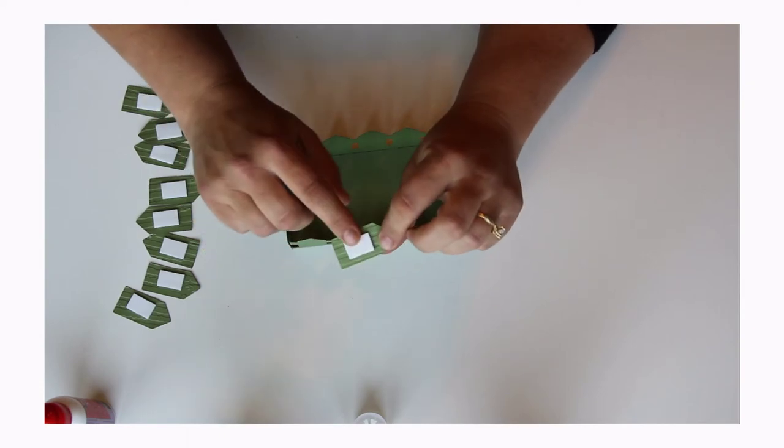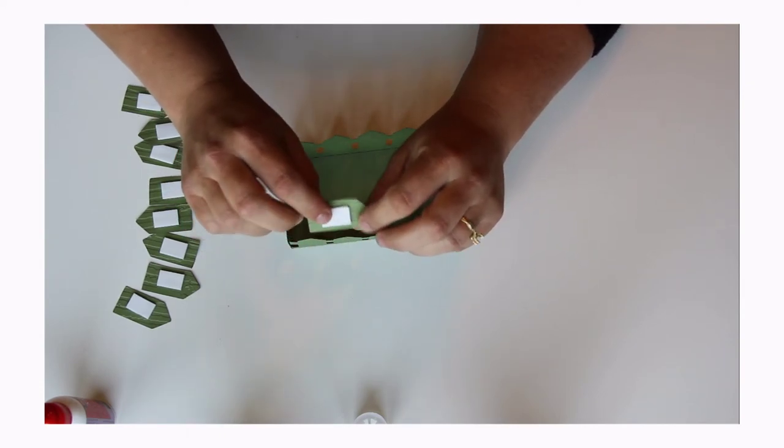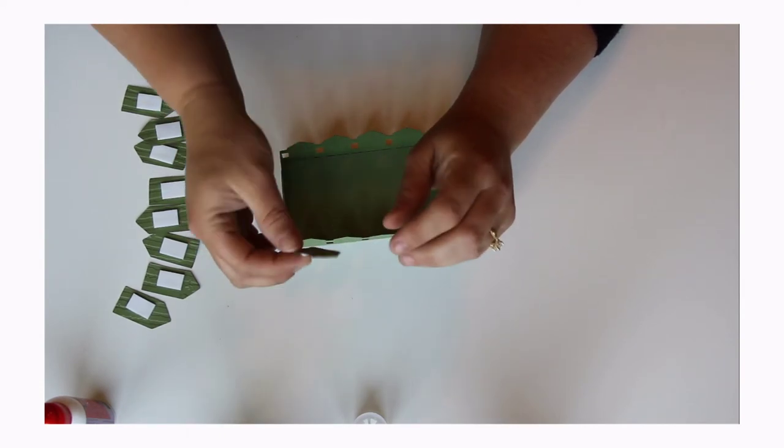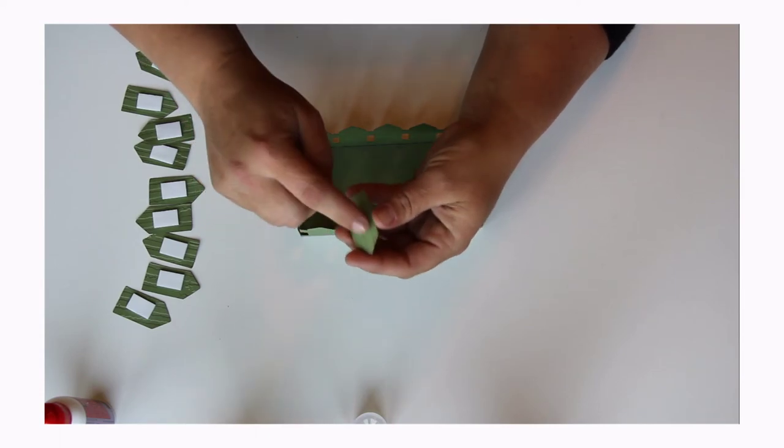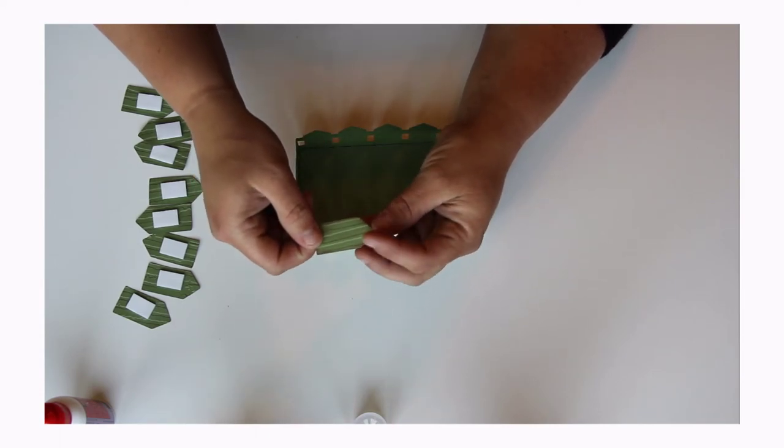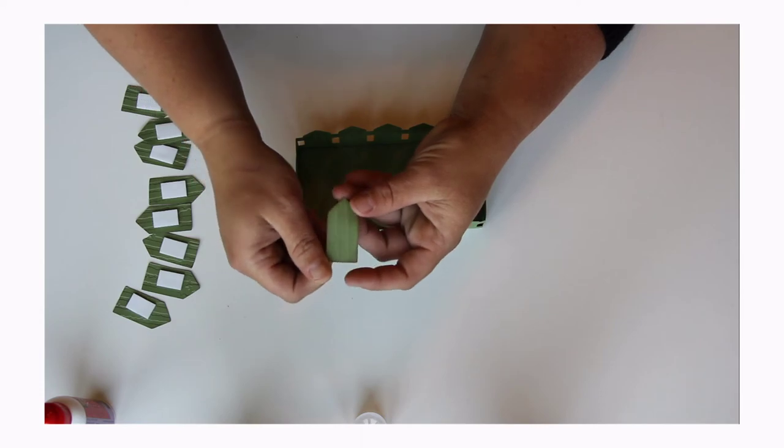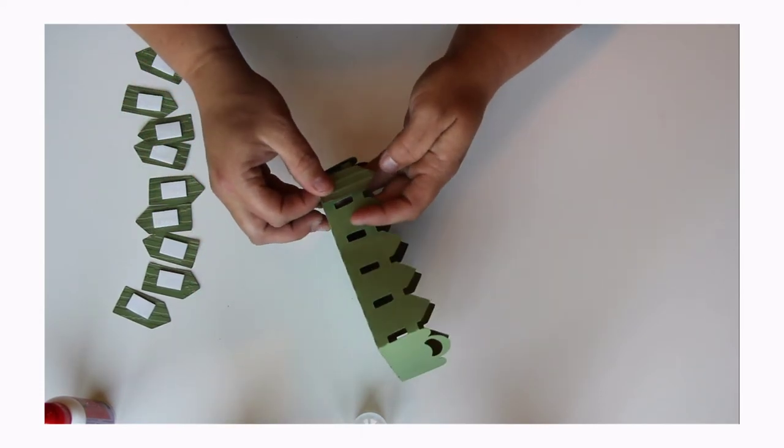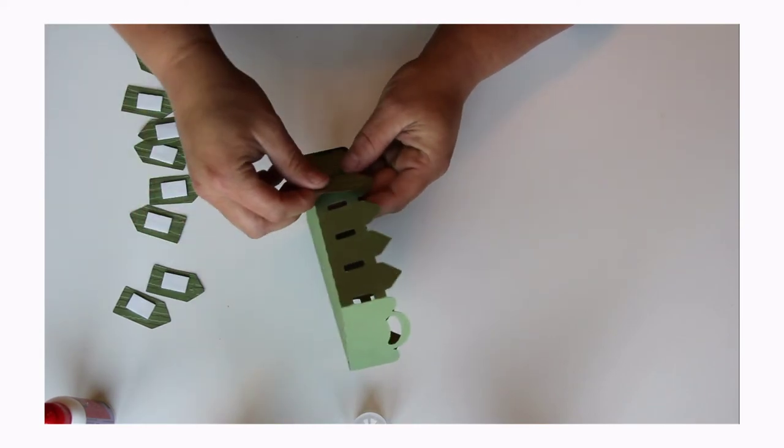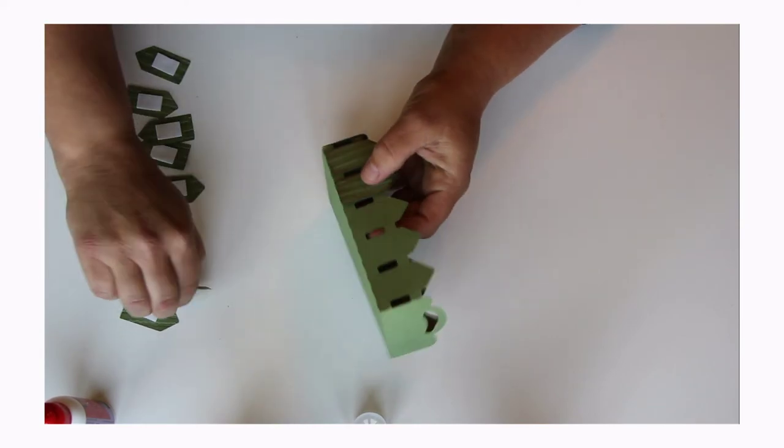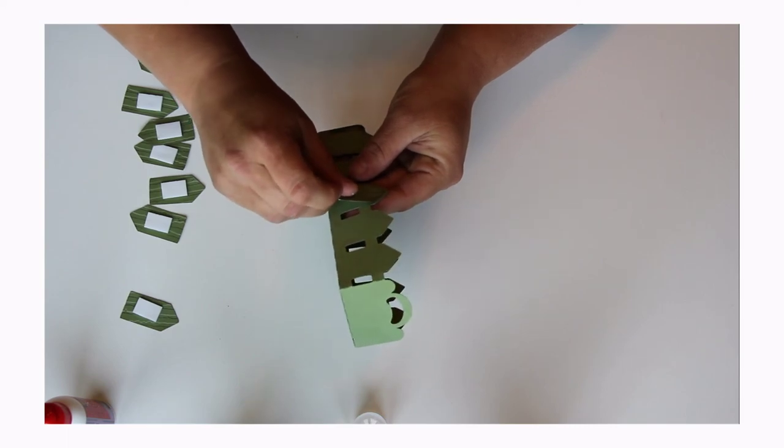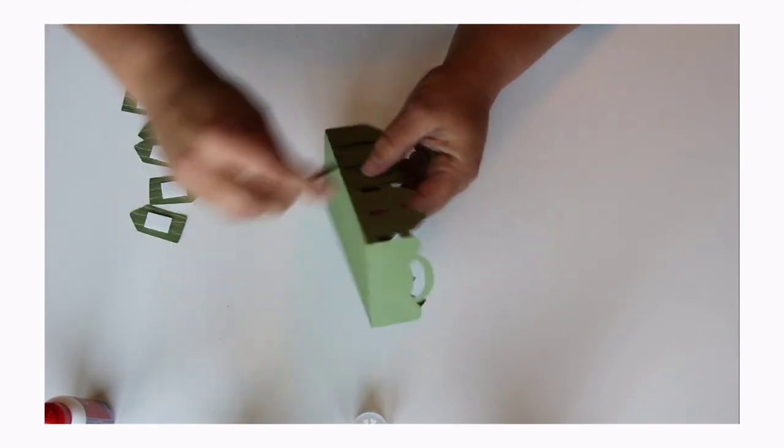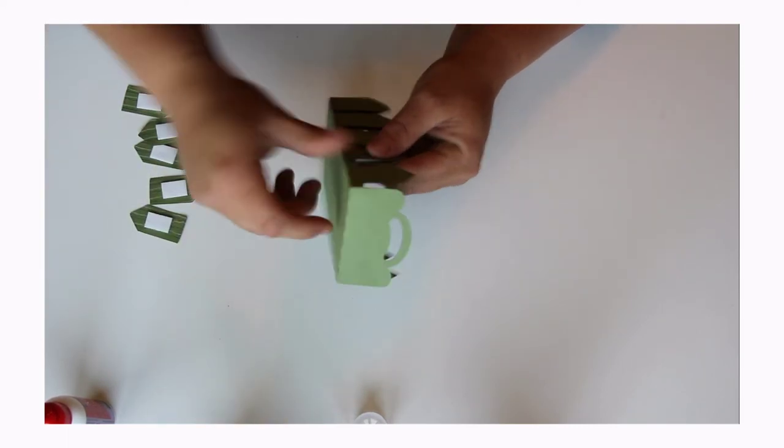I've already put foam dots, foam squares on the fences here. I embossed them with the Cuddlebug Distress Stripes Embossing Folder. What we're going to do is just line them up and put them all around the box and just stick them right on. I really like the way this folder gives.